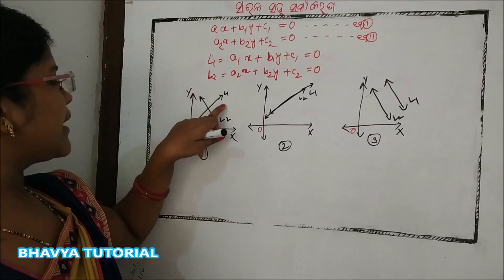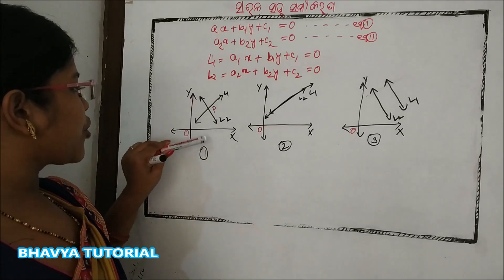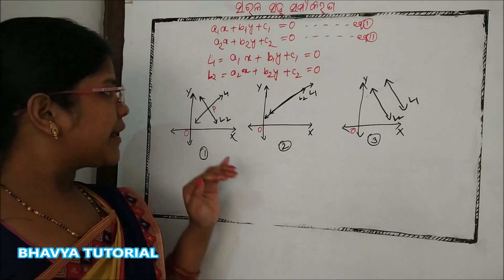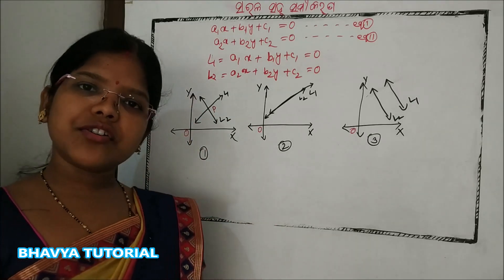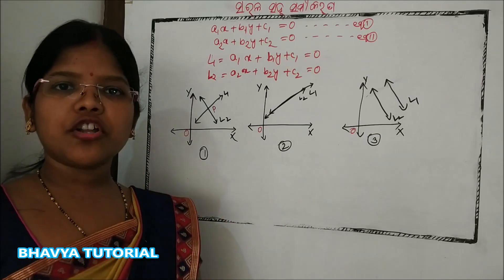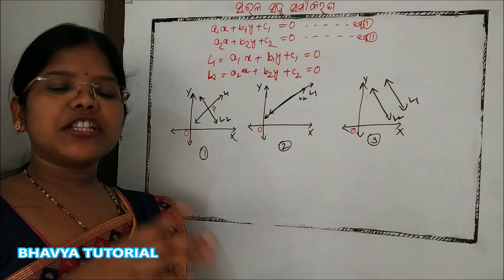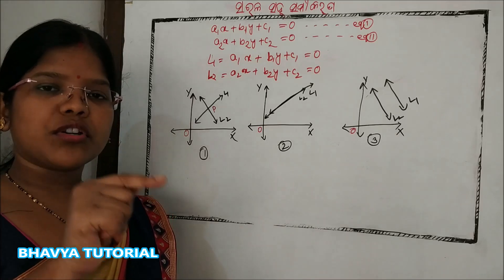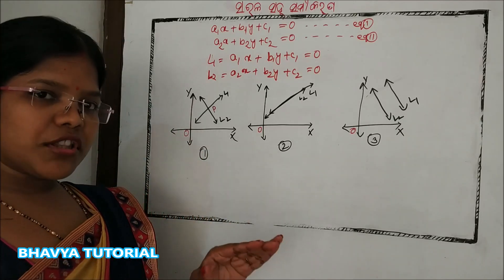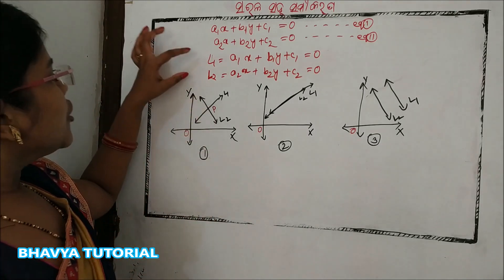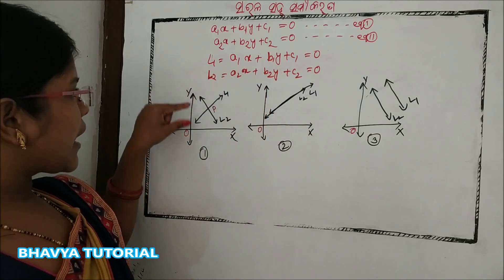L1, L2, L1, P. L1 and L2 with point P. L2, D. L1, L1, L1. O, L1. R2, L1.